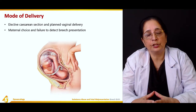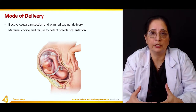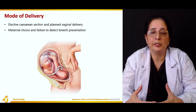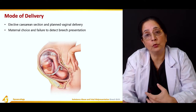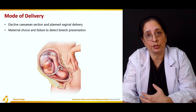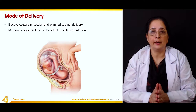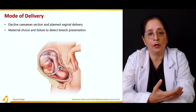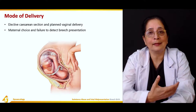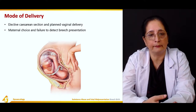If labor starts and the obstetricians attempt a normal vaginal delivery but then find out the presentation is breech, sometimes they have to go for an emergency C-section. So maternal choice and failure to detect breech presentation are both responsible for which delivery method is chosen.